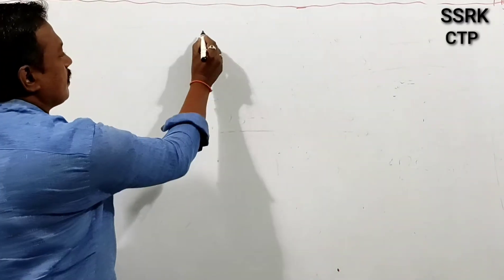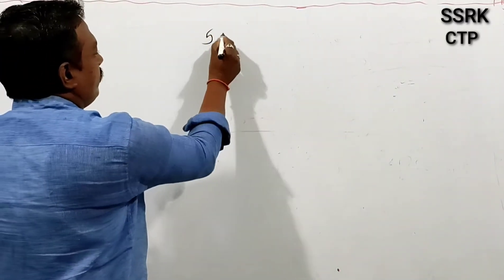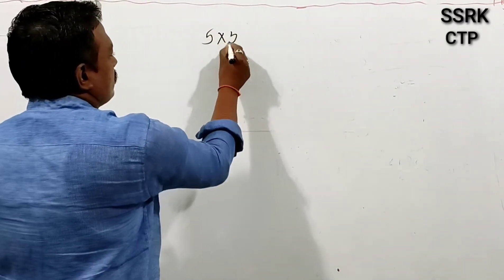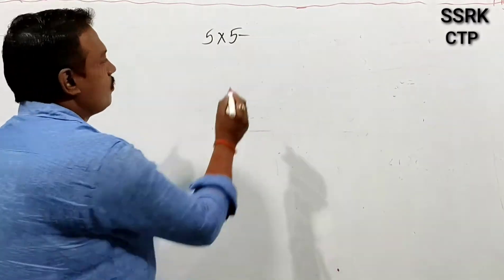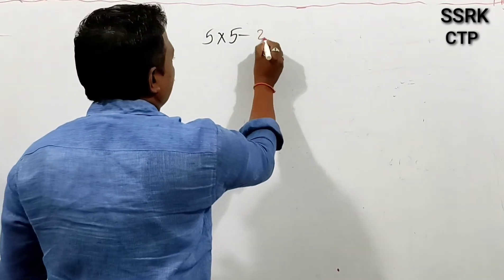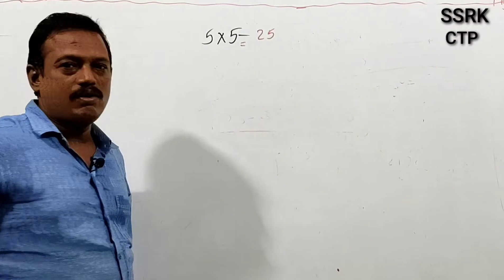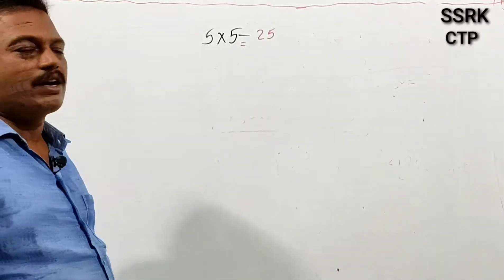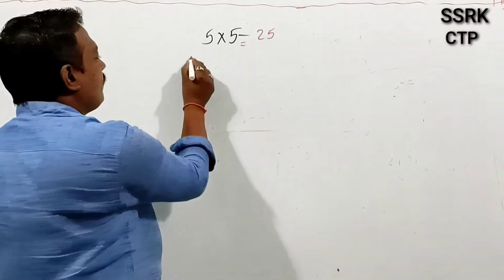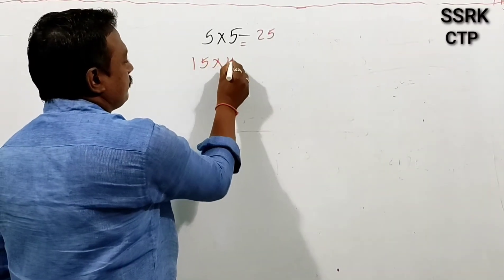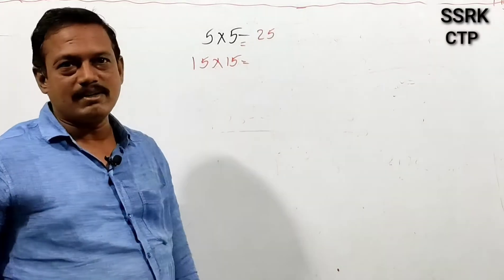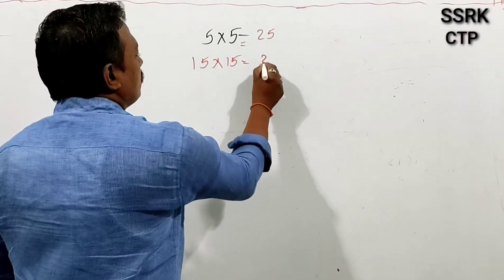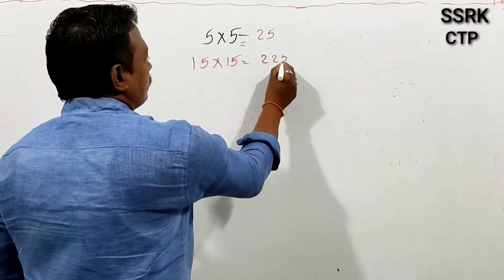We are going to show 5×5. So 5×5 is 25. Now, numbers ending with 5: 50×50 is 2500.